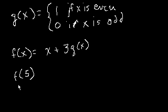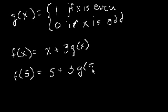Well, it's really pretty straightforward. We take this 5 and we replace it for x in the function f. So f of 5 is equal to 5 plus 3 times g of 5, right? We just literally took this 5 and replaced it everywhere where we see an x.